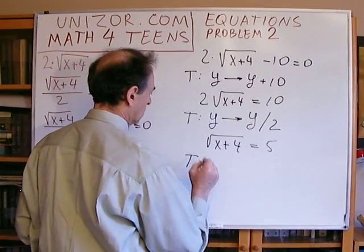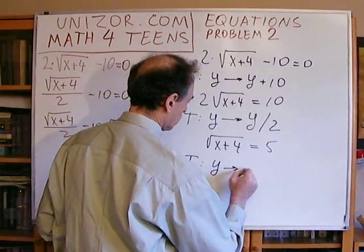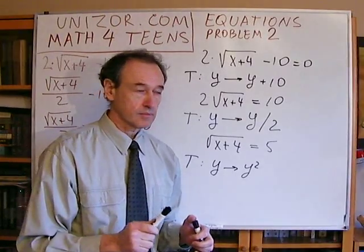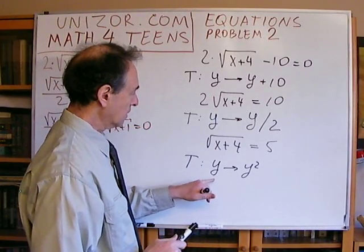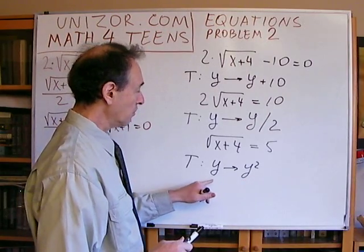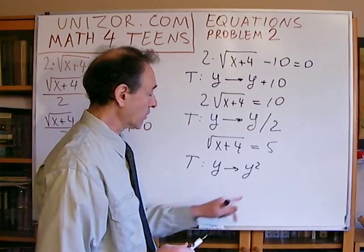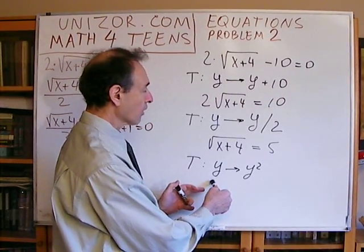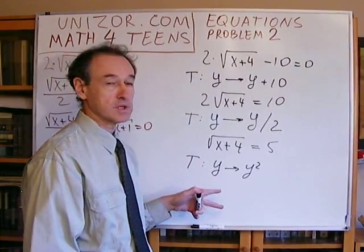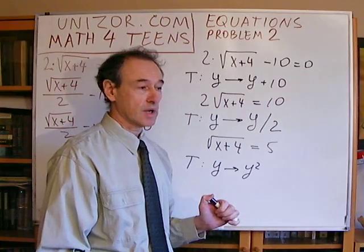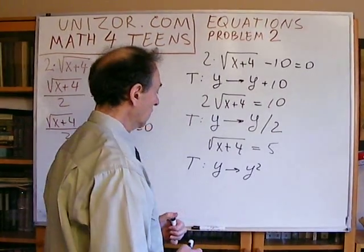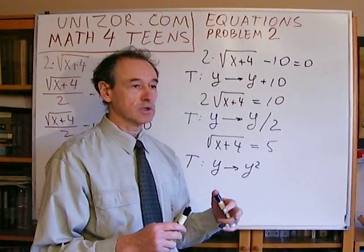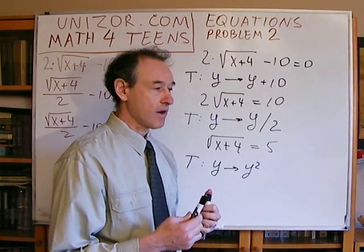The next transformation we obviously have to apply is squaring. Now, this transformation is not invariant. Why? Because from 7 you go to 49, and from minus 7 you also go to 49 by squaring — there is no one-to-one correspondence. We have two different arguments, 7 and minus 7, which are transformed into the same number, 49. So this is a non-invariant transformation. Let's think about what negative effect it can have.